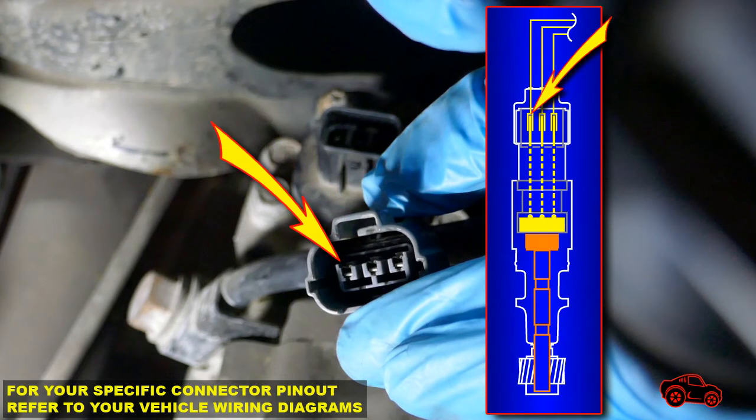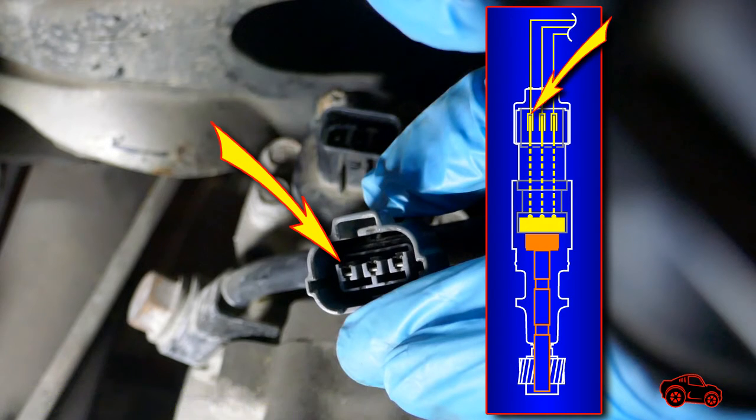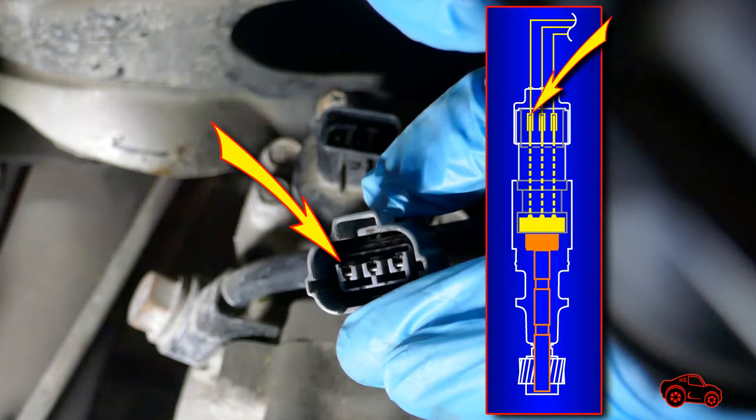The last contact socket gets the reference voltage from the PCM when the ignition key is turned on. The reference voltage is usually 5 volt, but in some cases it can be above 9 volt.